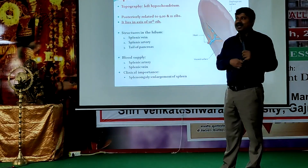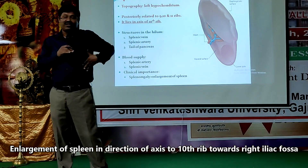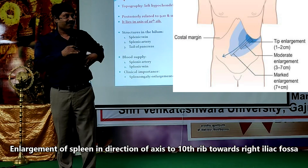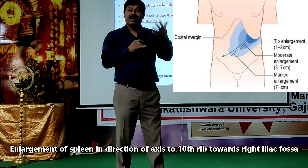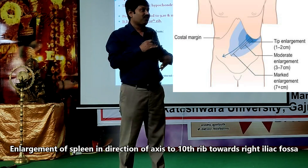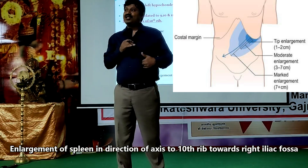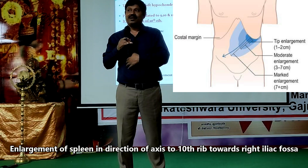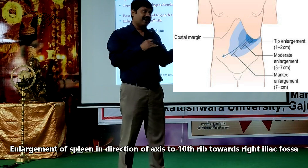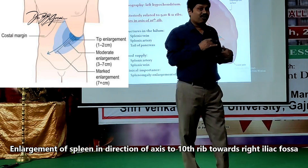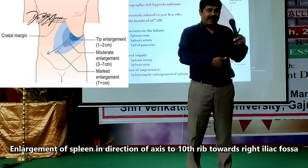Removal of the spleen is known as splenectomy. Enlargement of the spleen is splenomegaly. When the spleen starts getting enlarged — such as in chronic malaria or leukemia — it grows along the axis of the 10th rib and comes down below the costal margin, where it can then be palpated.